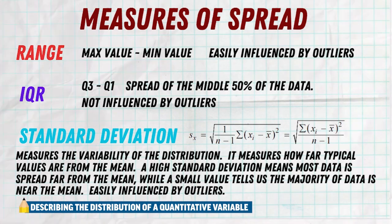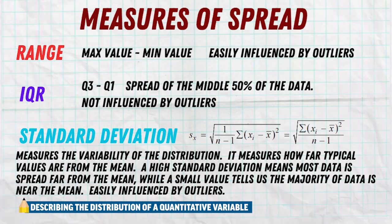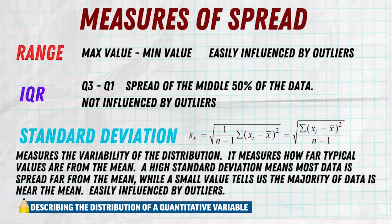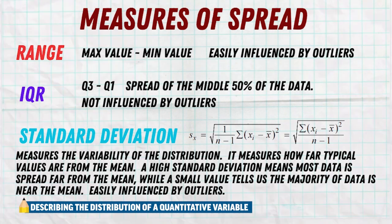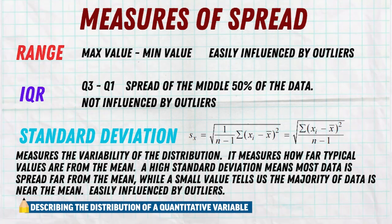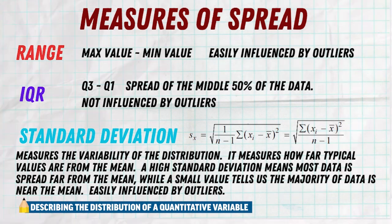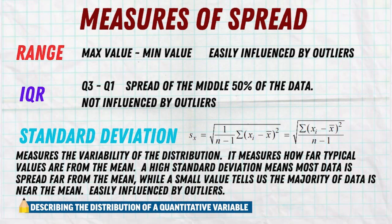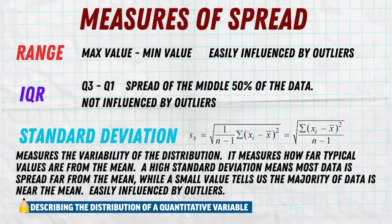Then we have the IQR, which stands for interquartile range. This is the range of the middle 50% of your data from Q1 to Q3. Finding it is really easy — just take the third quartile and subtract the first quartile: IQR = Q3 − Q1.